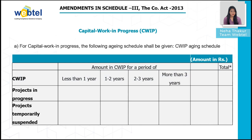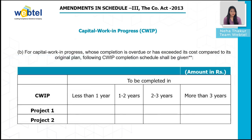The next amendment is the capital work in progress (CWIP) aging schedule. For capital work in progress, the following aging schedule shall be given, and the total shall tally with the capital work in progress amount in the balance sheet. For capital work in progress whose completion is overdue or has exceeded its cost compared to the original plan, a CWIP completion schedule shall be given. Details of projects where activity has been suspended shall also be given separately.